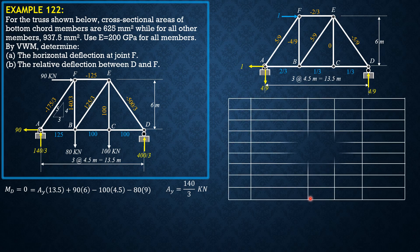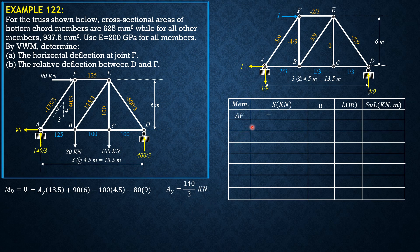Now tabulate the results. Columns are: member, S in kilonewtons, U (virtual force), length in meters, and product SUL. Bottom chord members have area 625 mm square; all other members are 937.5 mm square, colored orange. Member AF: S is negative 175 over 3, U is 5 over 9, length is 7.5 (square root of 4.5 squared plus 6 squared), product SUL is negative 243.056.